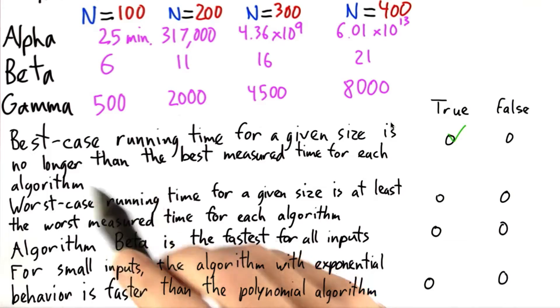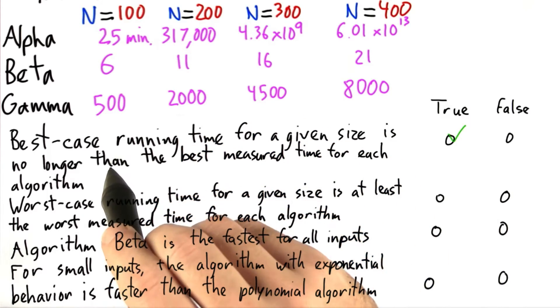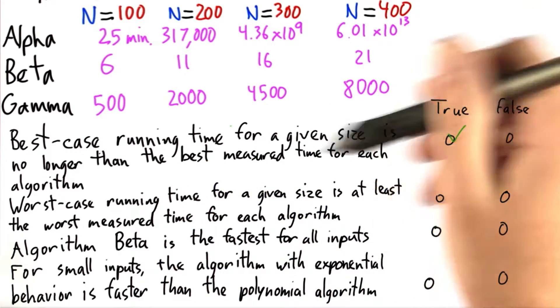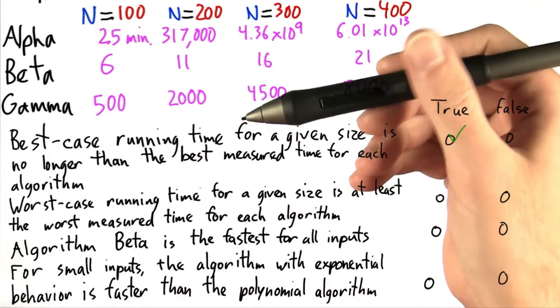To think about this, all you really need to do is realize that by definition, the best case running time is better than all other possible running times. So if there's one smaller than it, well, it's not really the best, is it?